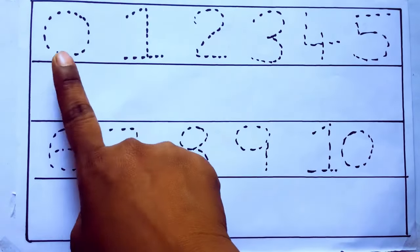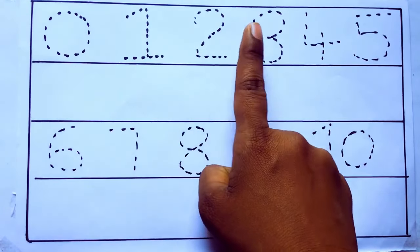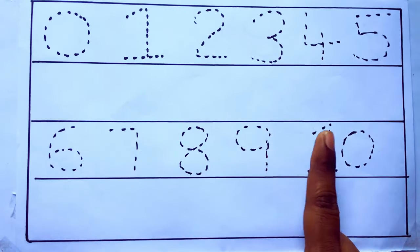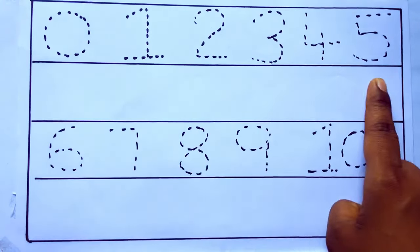0 to 10: 0, 1, 2, 3, 4, 5, 6, 7, 8, 9, 10, and rewriting the numbers.